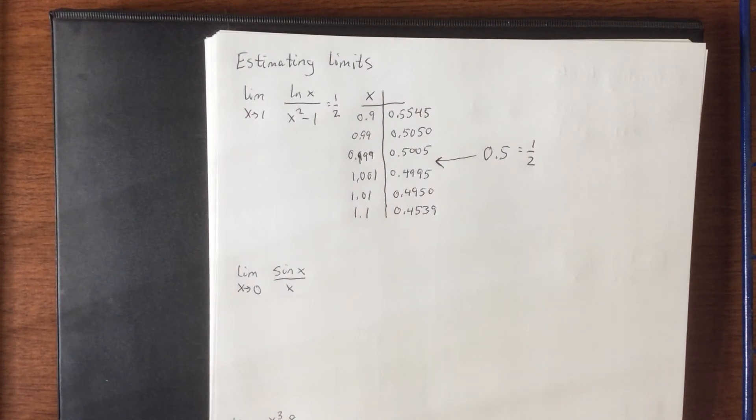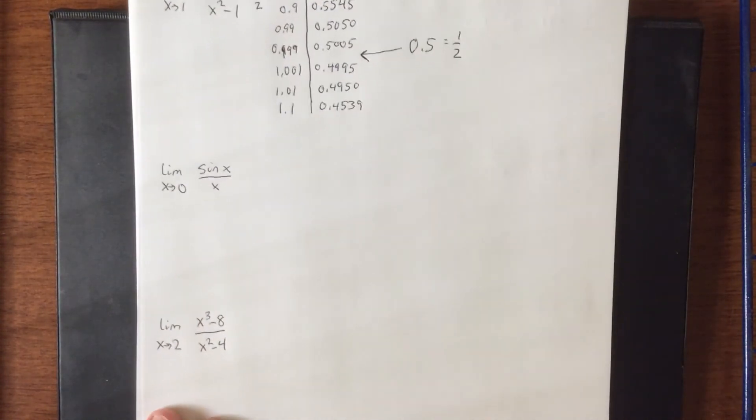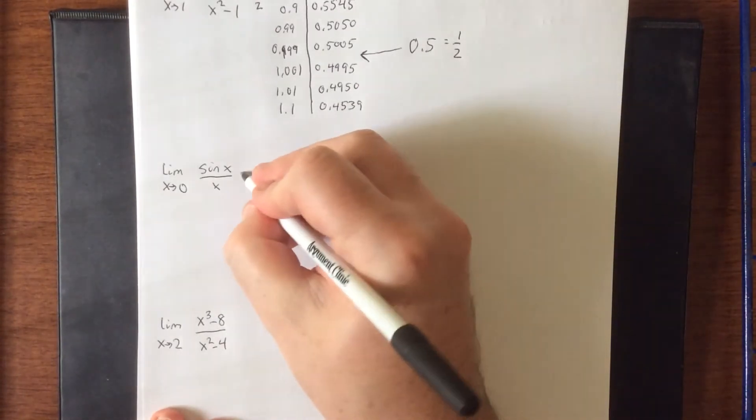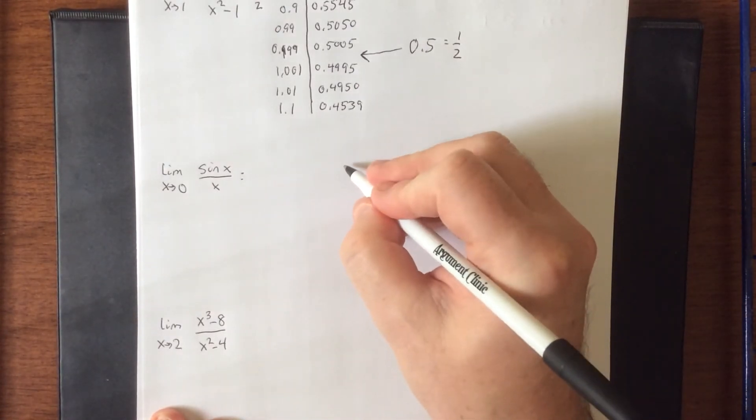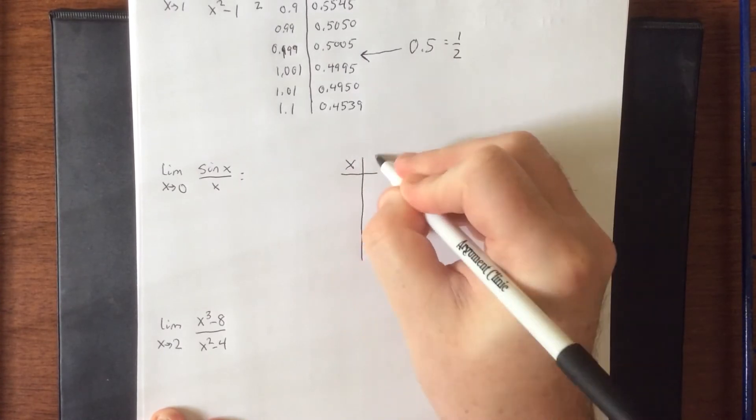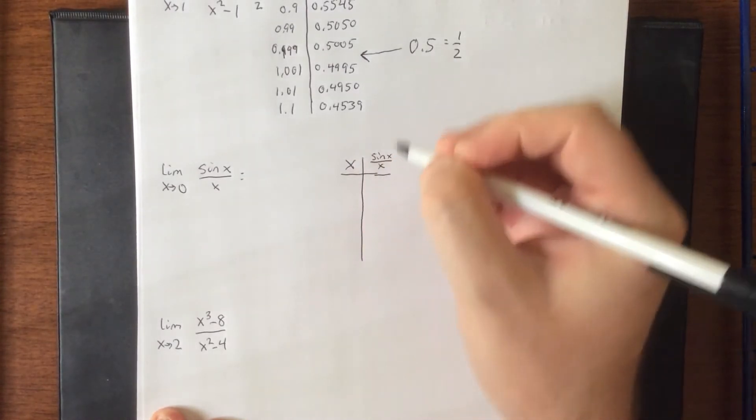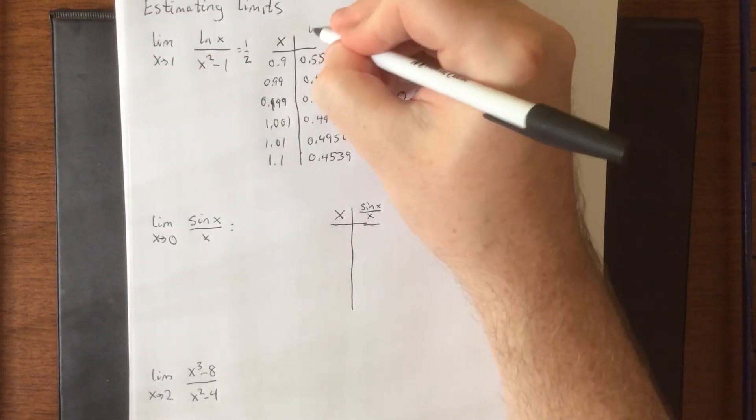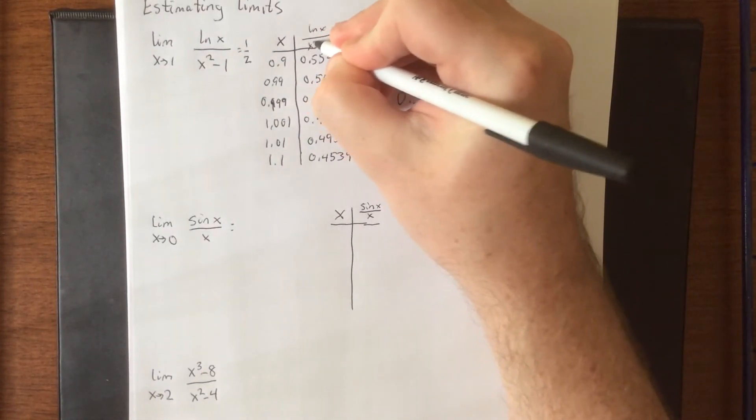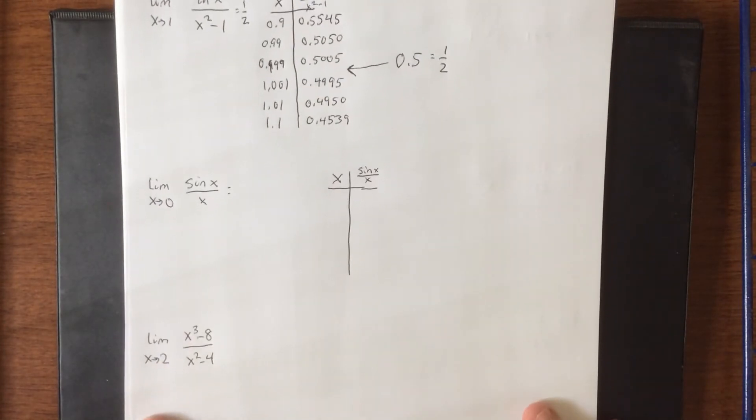So next limit is x approaching 0 of the sine of x divided by x. Do make sure that your calculator is in radian mode for this one, or else this is just not going to work out at all. I suppose I should have done that for the other one too. Natural log of x over x squared minus 1.